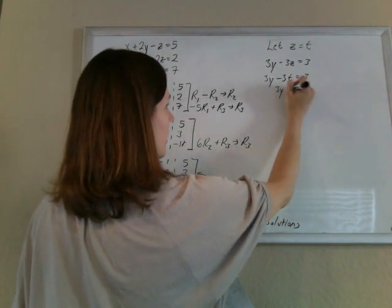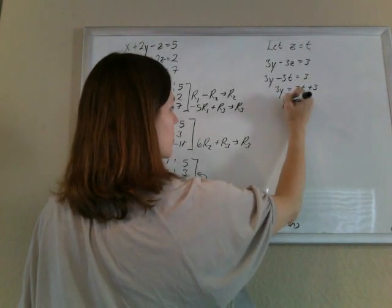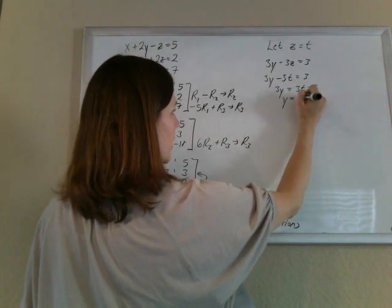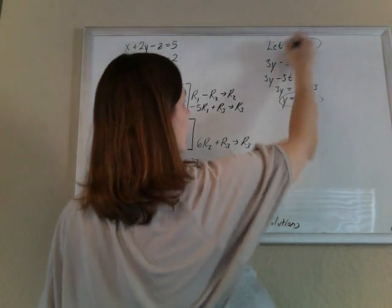So 3y equals 3t plus 3. So divide by 3. y equals t plus 1. Alright, fine.